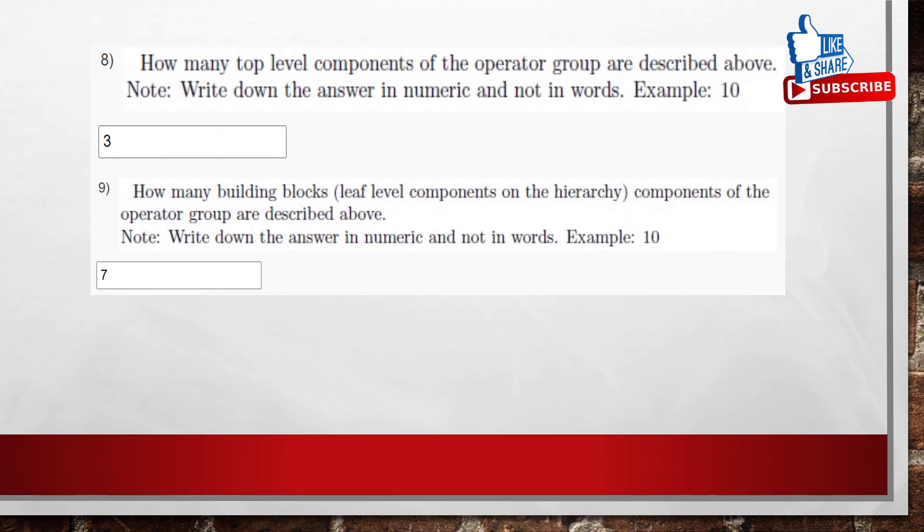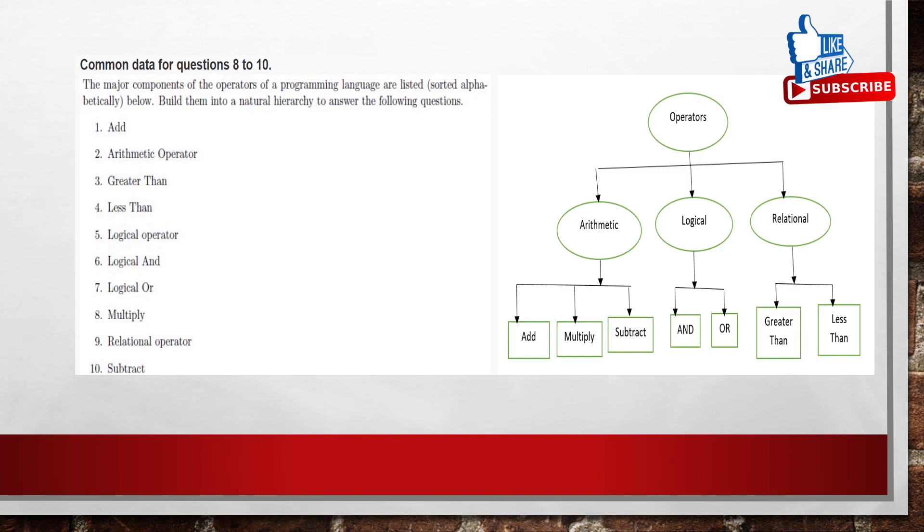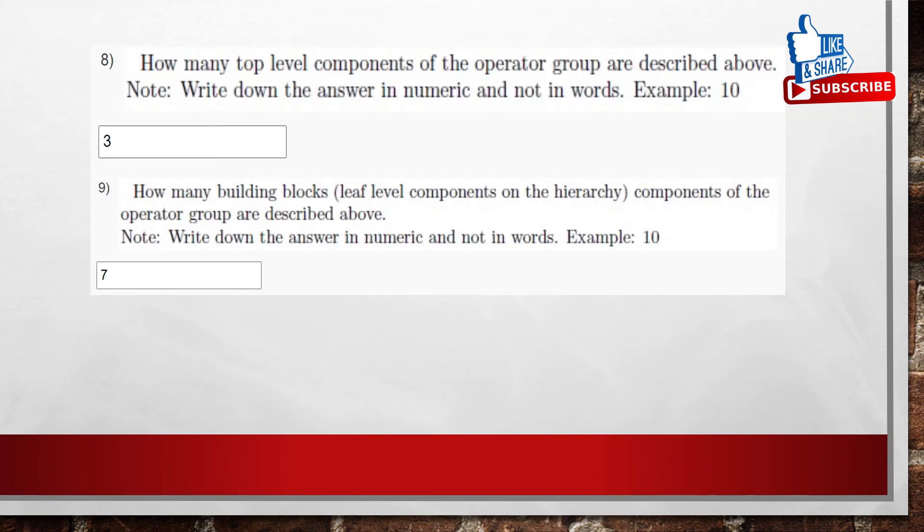So next coming to the 9th question. How many building blocks, components of the operator group are described below? So, leaf level. So if you see the hierarchy, we are having 5 plus 2, 7. So the answer option is 7.